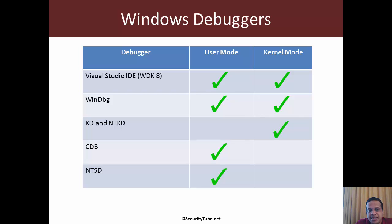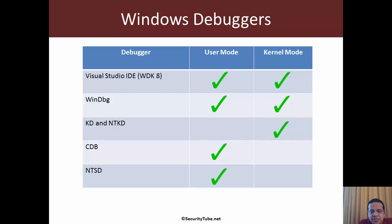Apart from WinDBG and to some extent the Visual Studio IDE, all the other debuggers are console mode debuggers. CDB, the console debugger, is a completely user mode debugger. NTSD is also a console mode debugger for user mode only. The key difference is that NTSD is launched in a new window while CDB inherits the window in which it is started. Even though CDB and NTSD are console mode, they are capable of debugging both console as well as GUI-based applications.